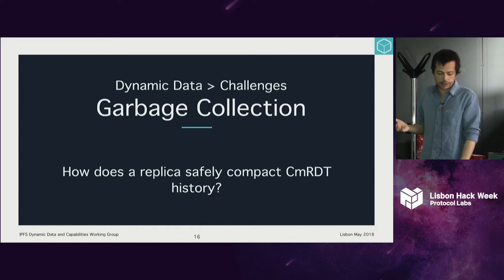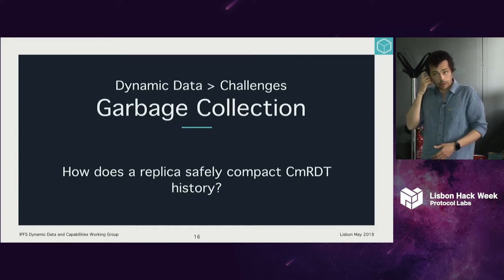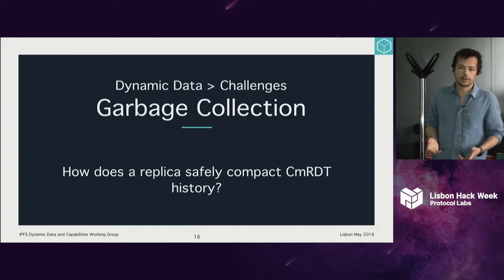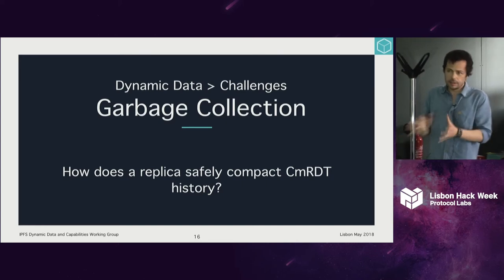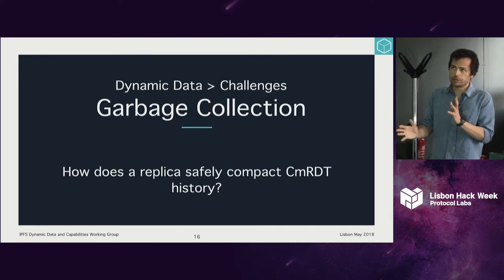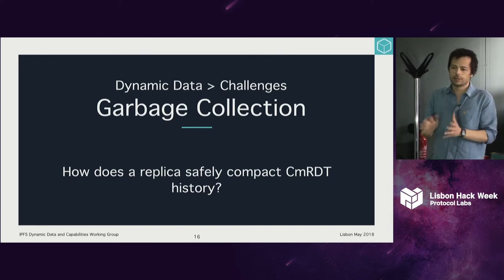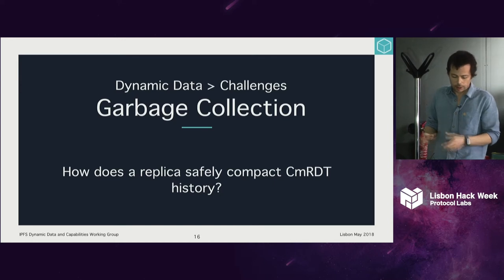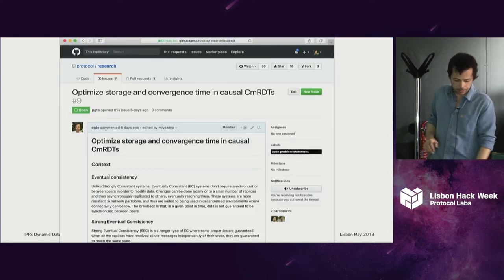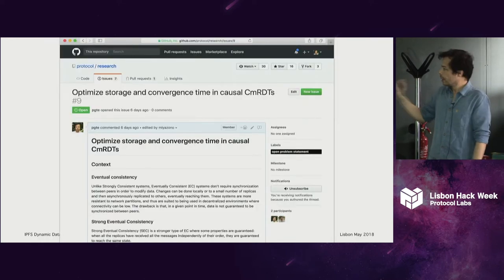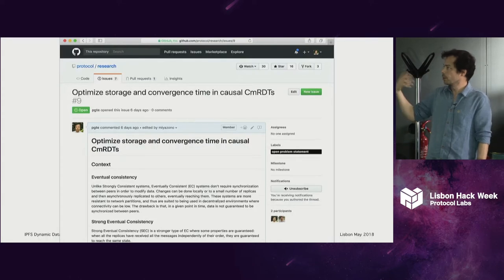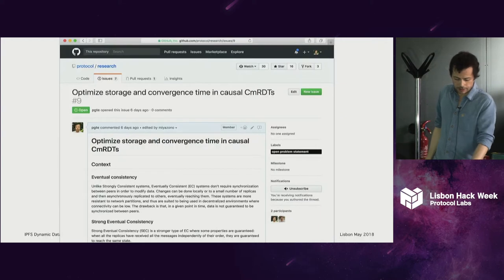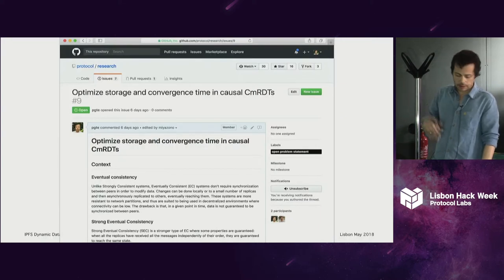That's one problem. The other problem is local garbage collection — how does the replica safely compact the history? These two are kind of related problems, bundled up into an open problem statement: optimized storage and convergence time in causal CMRDTs. I encourage you to take a look at that.